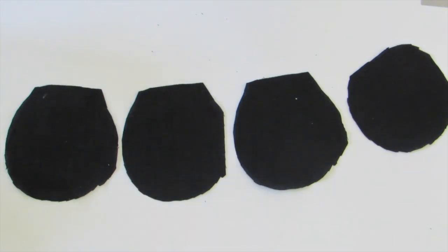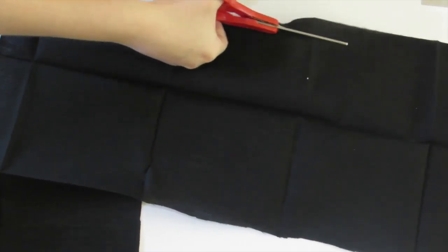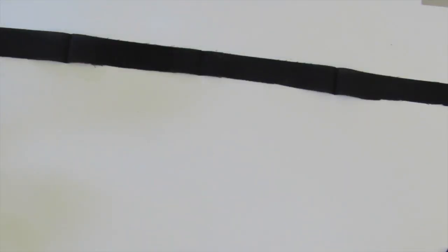Now that you have your four circles ready, cut a long strip a couple of inches wide from your fabric. This will be used to cover the headband with.